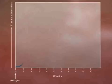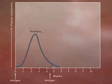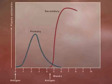The first time B and T cells are exposed to a specific antigen, the response takes weeks. If re-exposure occurs, B and T memory cells respond immediately to destroy the invader.